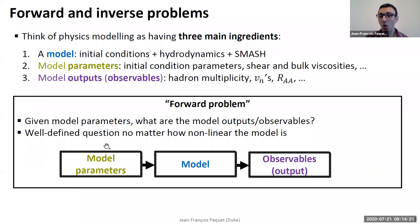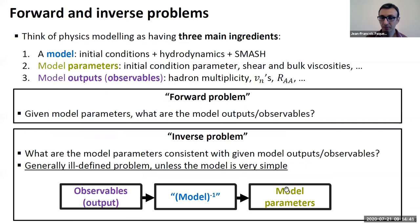What is trivial is what is called the forward problem. Given the model parameters, it's trivial to get the outputs - that's how a model works. But this is not the question we're interested in. What we're interested in is: what are the model parameters given the observables? In a sense, we're interested in the inverse problem.